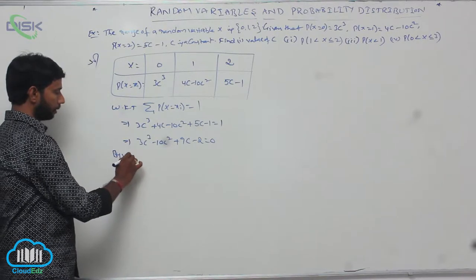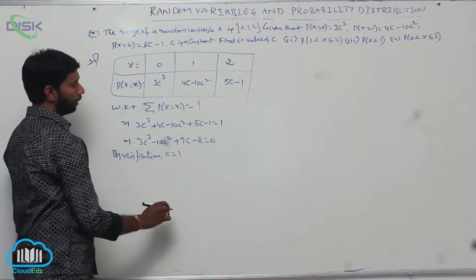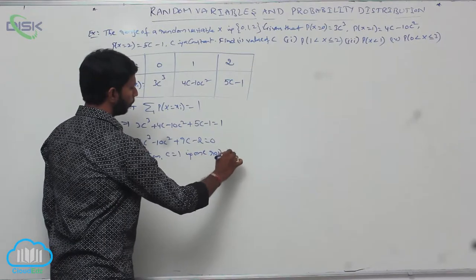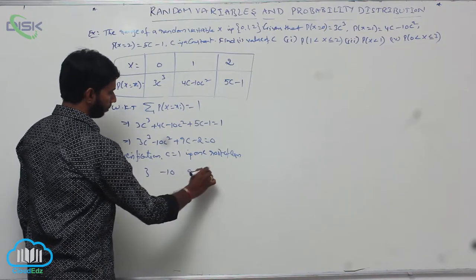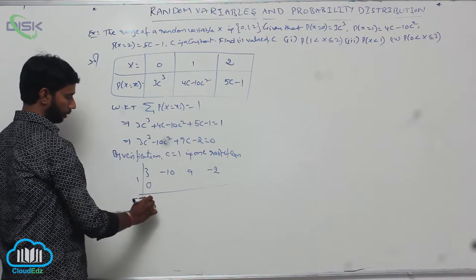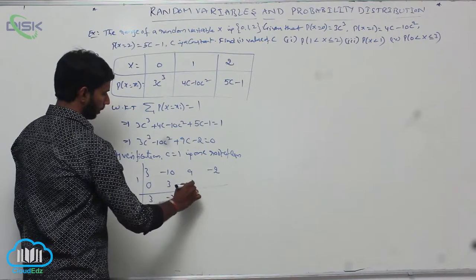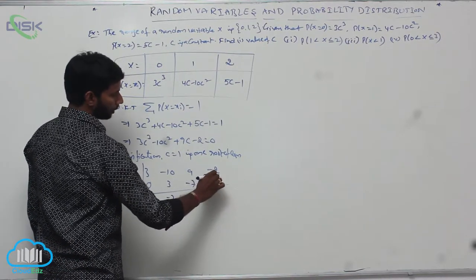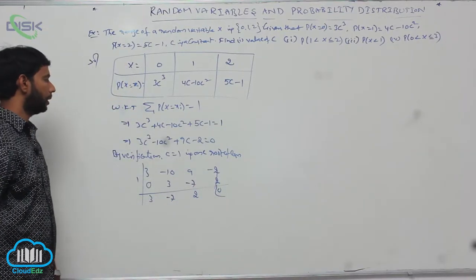By verification using trial and error, C = 1 is one root of the equation. Substituting: 3(1) − 10(1) + 9(1) − 2 = 3 − 10 + 9 − 2 = 0, with remainder 0. So one root is C = 1.